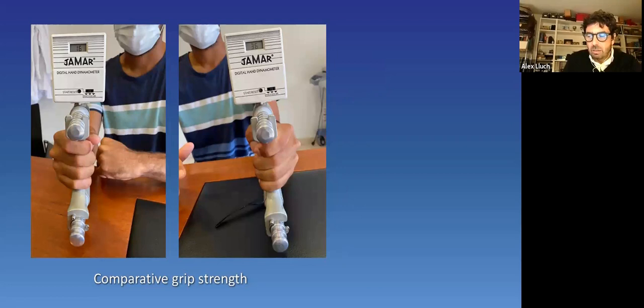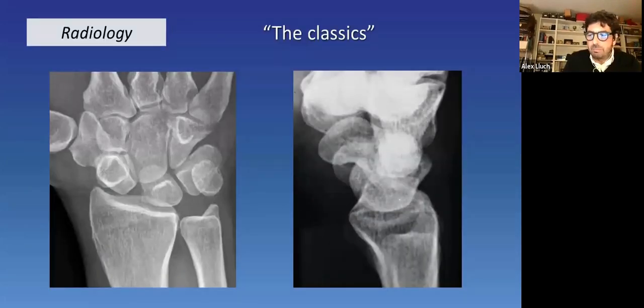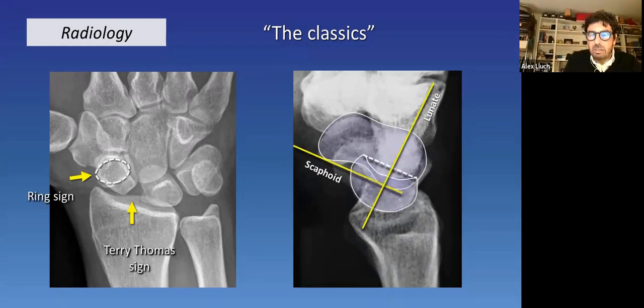And finally, comparative strength has to be tested. Repeated after an anesthetic injection in the injured side, it's useful sometimes, especially in cases with partial painful injuries. The second tool is radiology. The classical signs are still valid. The ring sign, Terry Thomas sign, on the lateral view, a clearly increased scapholunate angle. If they are very evident, they will probably reduce a static situation closer to collapse than to instability. So closer to the right side of our table.